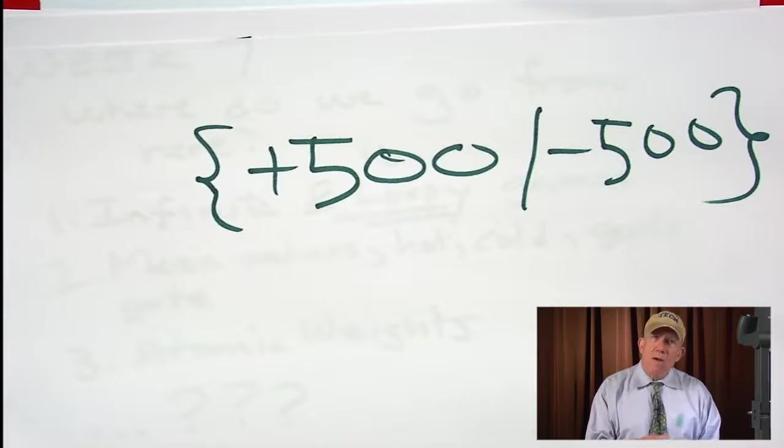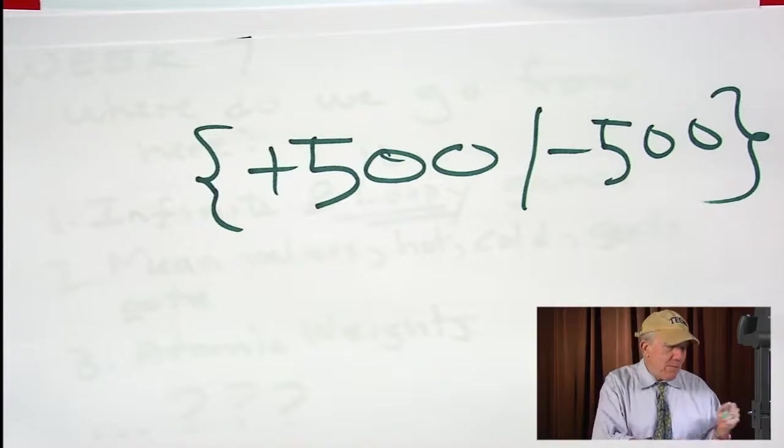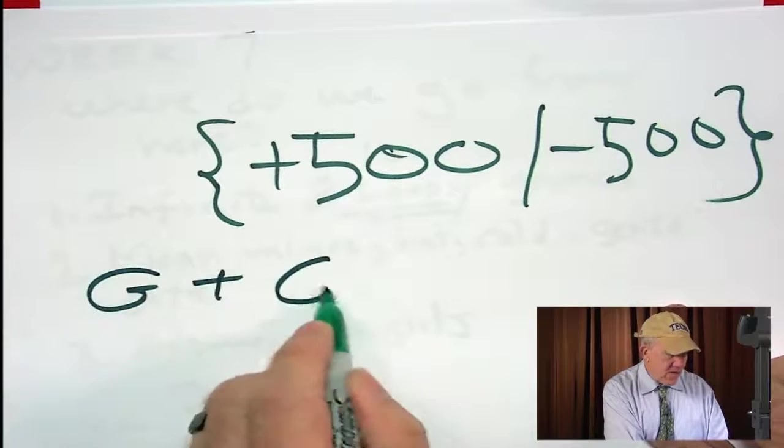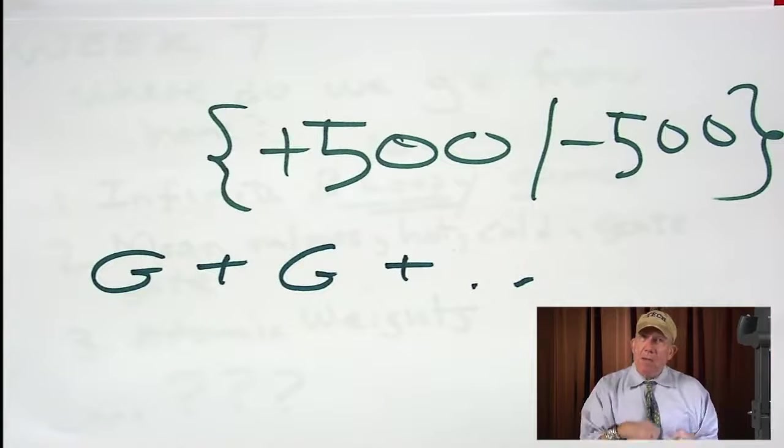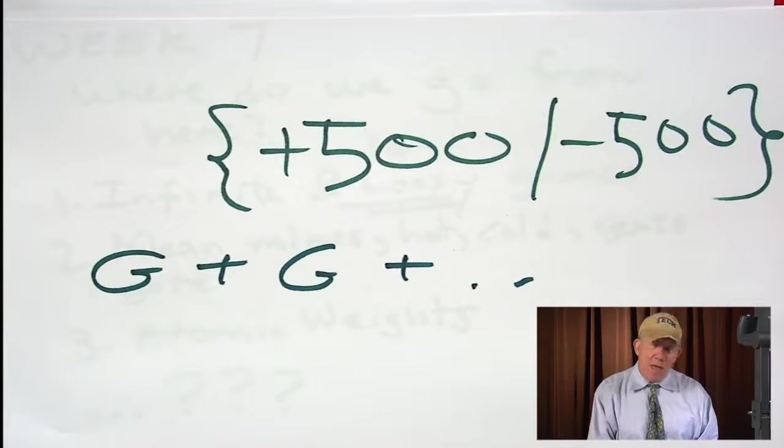But when you played some of these games, people grabbed the games. If this is the game G, and you played G plus G plus G, if you played sums of these, they behaved just like numbers, or very much like numbers, or close to numbers.